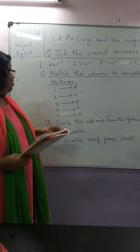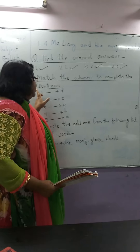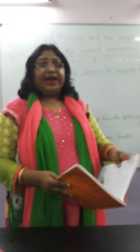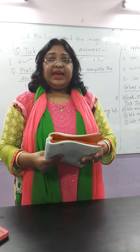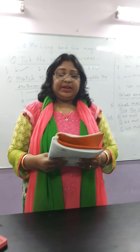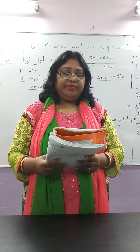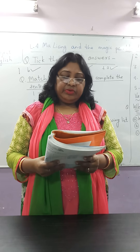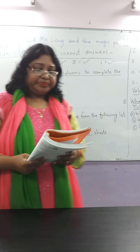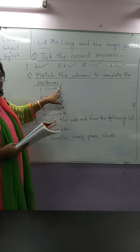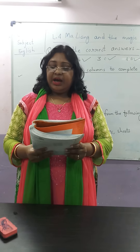Now we will solve: match the columns to complete the sentences. Please take out page number 46. Here two columns have been given, A and B. Reading column A first: number 1 — Maliyang drew with stone and sticks. Its answer is D — because he did not have a paintbrush.